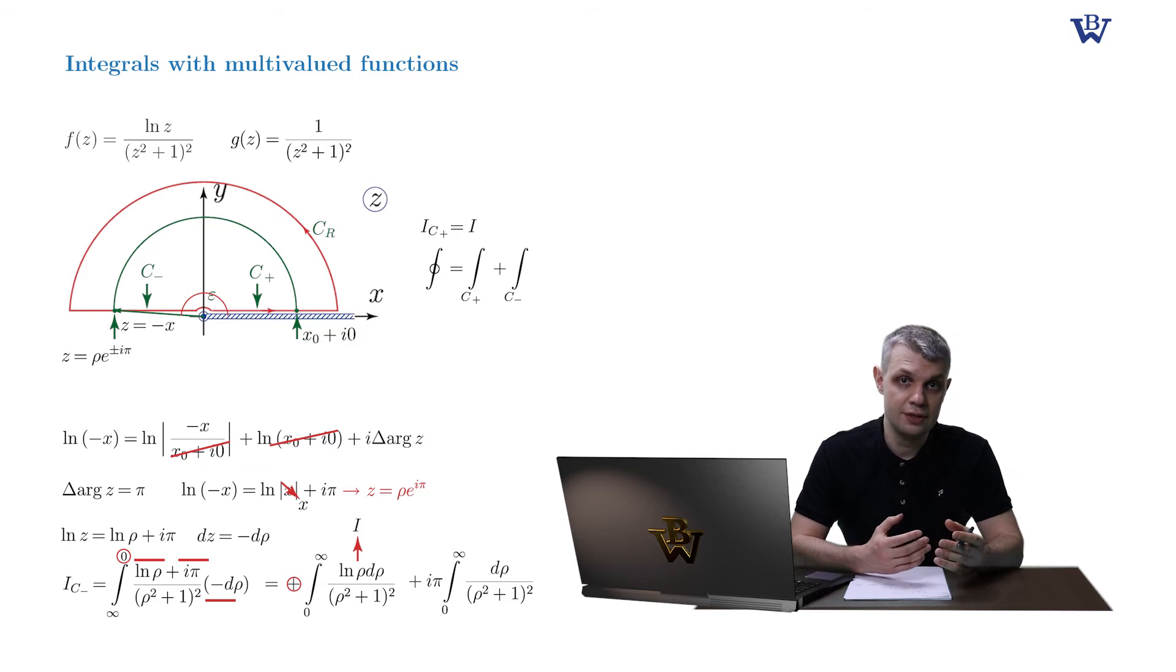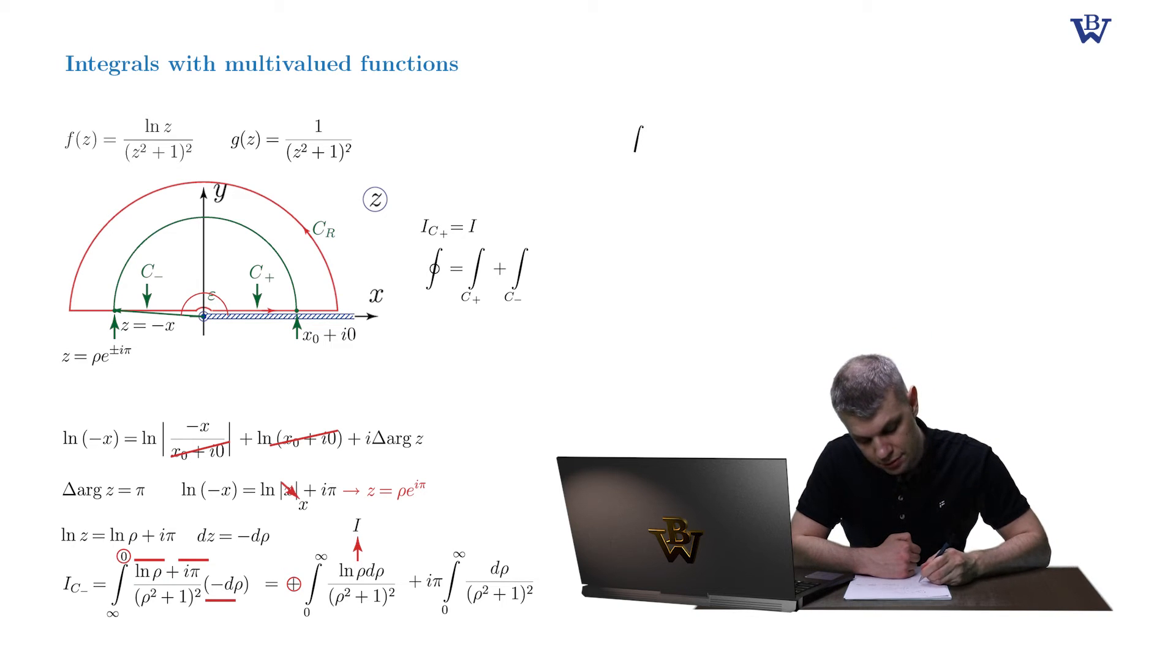So we achieved our goal. Due to the correct choice of the closed contour, now its constituents add up rather than cancelling out as before. And finally, the closed contour integral is equal to double the original integral plus the remainder term.